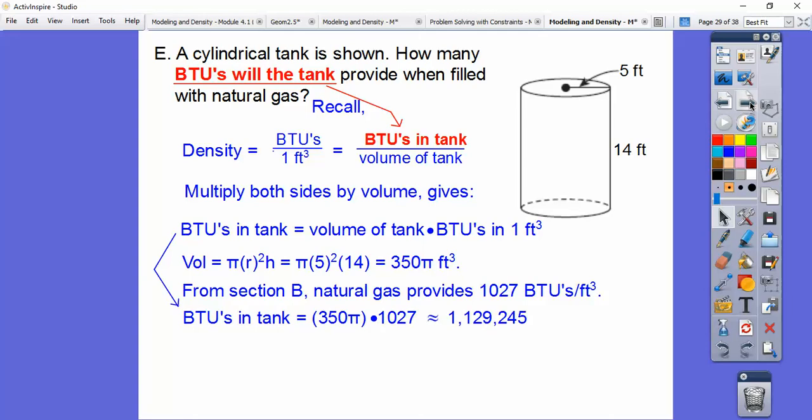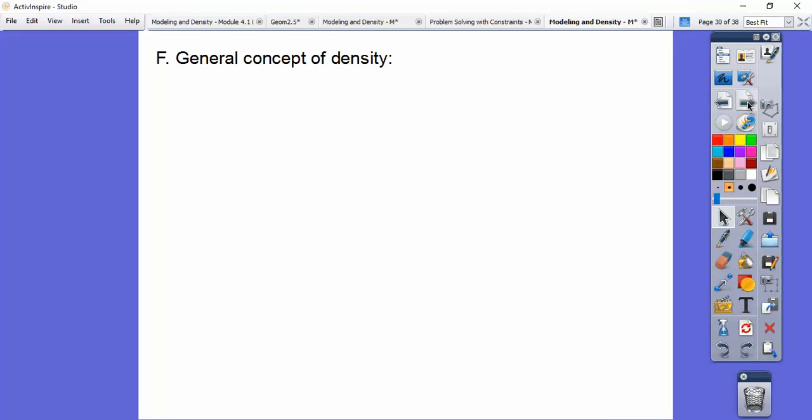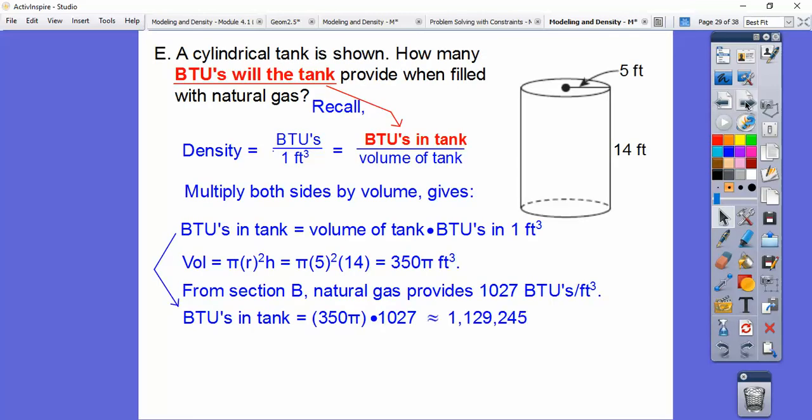So when we crank that out, we get about 1,129,245 right there. And then that would be our BTUs right there.